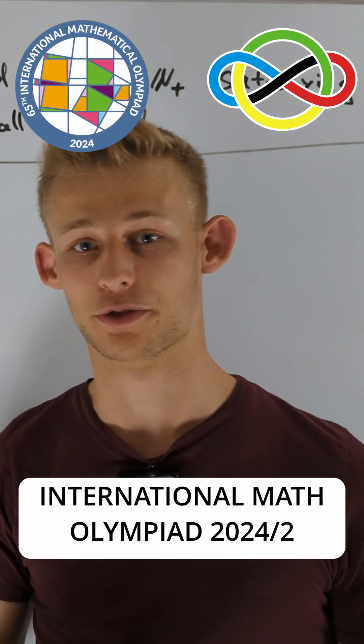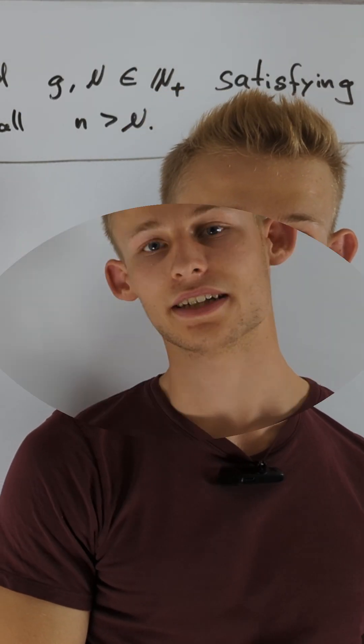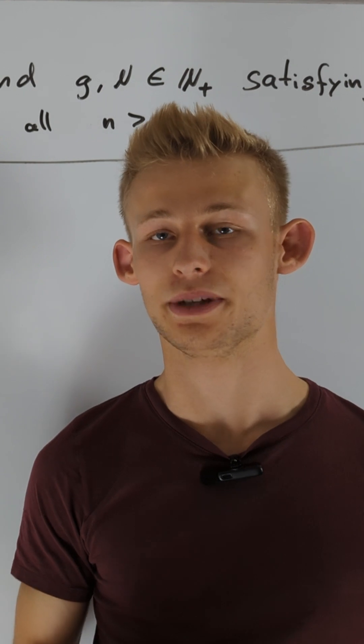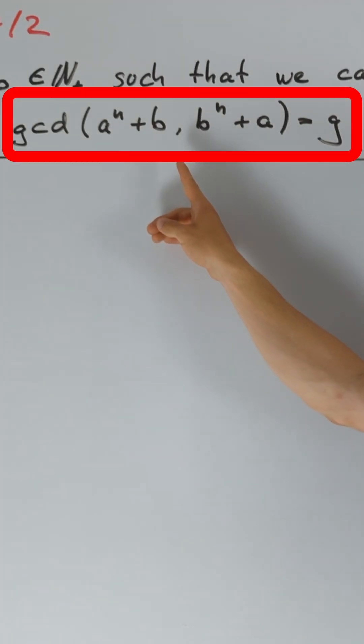This is the fastest IMO problem 2 solution in IMO history. Our task is to find all integers a, b such that this expression is eventually constant.